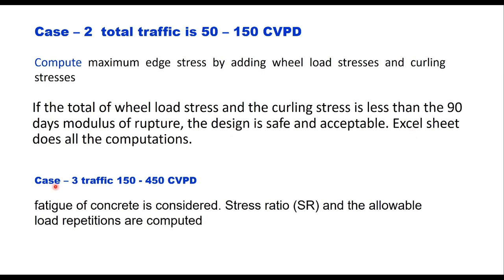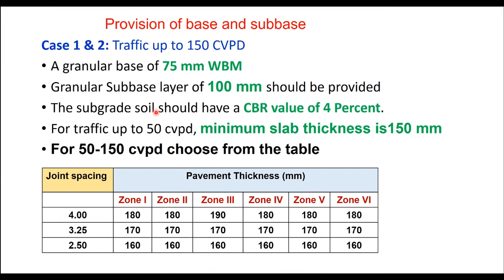Case 3 applies when traffic is more than 150 but less than 450 commercial vehicles per day. Here, fatigue of concrete is considered, stress ratio is computed, and based on the stress ratio the allowable number of load repetitions is determined. IRC guidelines for subbase in concrete pavement: for cases 1 and 2 (up to 150 CVPD), a granular base of 75 mm WBM is recommended below the concrete slab. A GSB layer of 100 mm may or may not be provided when traffic is less than 50 CVPD, but it is always desirable for uniform support. Subgrade soil should have a CBR value of minimum 4%.